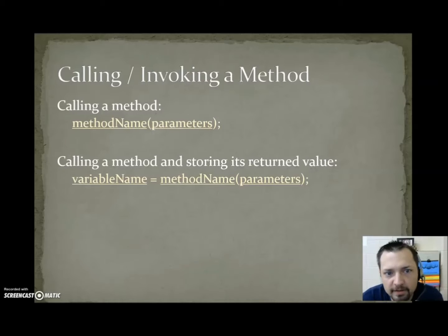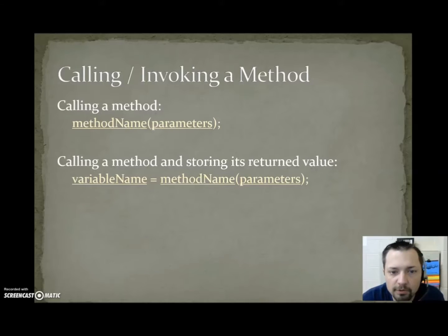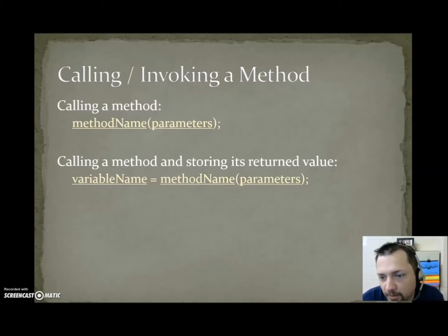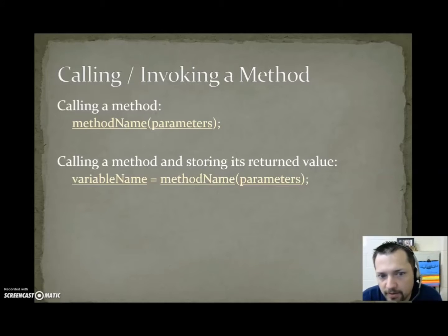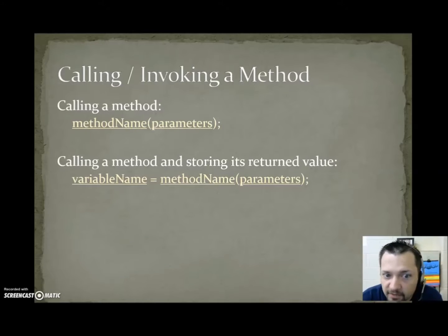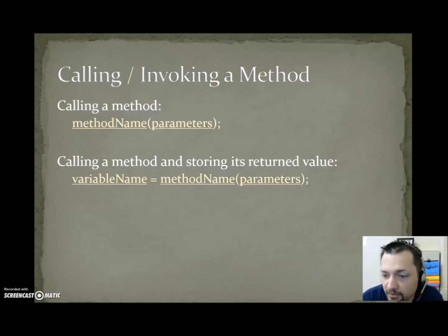Calling or invoking a method. To call a method, you say the name of the method, parentheses, parameters, parentheses, semicolon. If a value is returned by the method being called, it's going to be thrown away — it's not being stored. If you want to call a method and store the returned value, it's: variable name equals method name, parentheses, parameters, parentheses, semicolon. The variable has to be of an appropriate type to store the value being returned. For example, if the method returns a double, the variable on the left must be of type double. If the method returns an int, you can store it in an int or a double, since an int is a simpler type. The variable on the left must be able to hold what's being returned on the right.